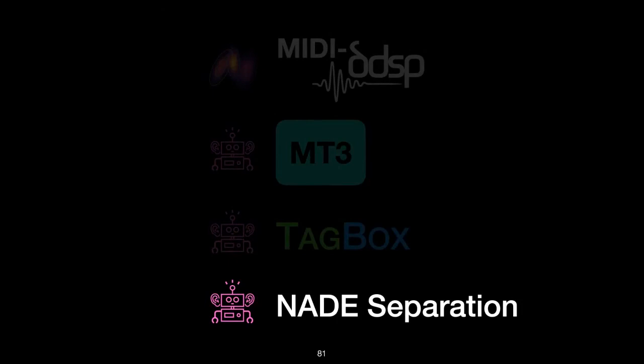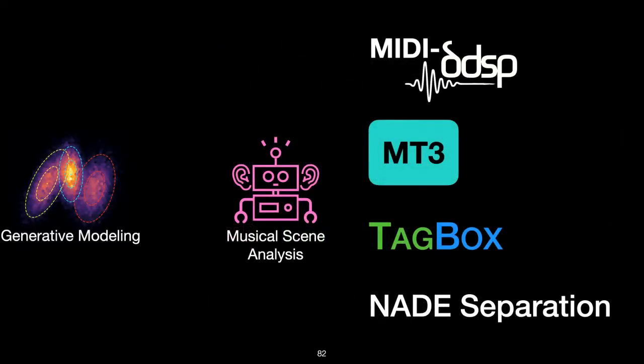So this is NAID separation, where again, I borrowed some ideas from generative modeling to learn the inter-source dependencies between different sources. I'll be presenting this again at ICASSP if you have more questions, but I want to kind of summarize this talk where I presented four recent projects that all marry aspects of generative modeling and musical scene analysis. MIDI DDSP is a generative model that enables realistic synthesis and expressive control. MT3 enables better transcription of more instrument types by using an encoder-decoder transformer. TagBox repurposes a generative audio model and a music tagger to do source separation without retraining either model. And finally, NAID separation uses autoregression to learn the interdependencies between sources when we're doing source separation. I hope I've made some kind of convincing argument that there's lots of room for cross-pollination between the areas of generative modeling and musical scene analysis, and I'm looking forward to seeing how you can provide new insights that power the next generation of musical instruments.